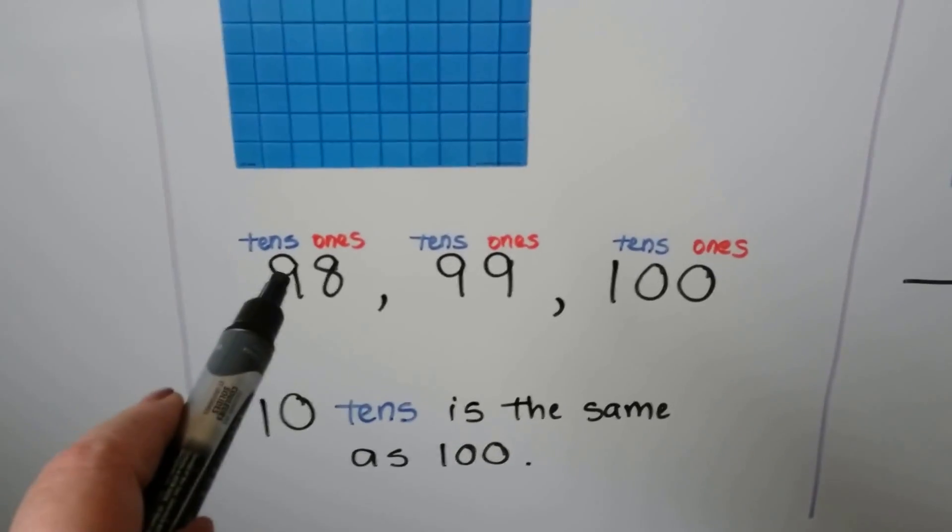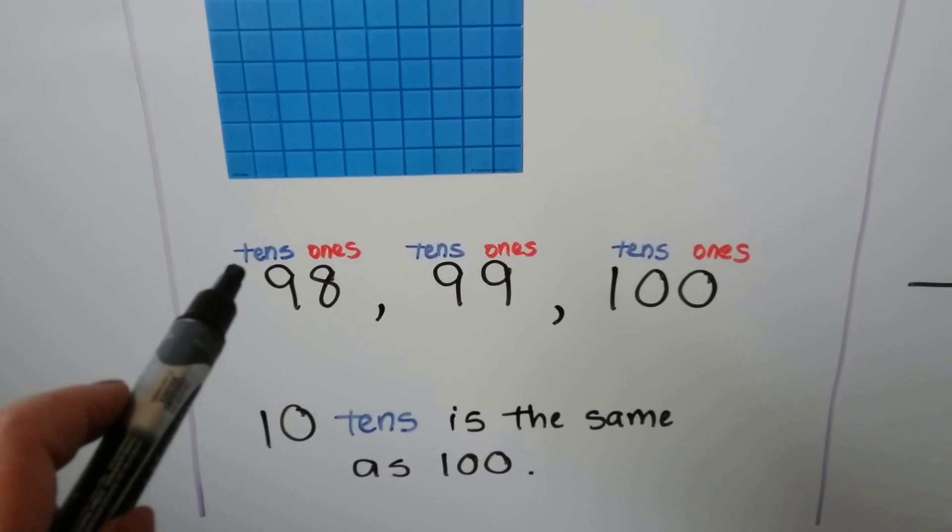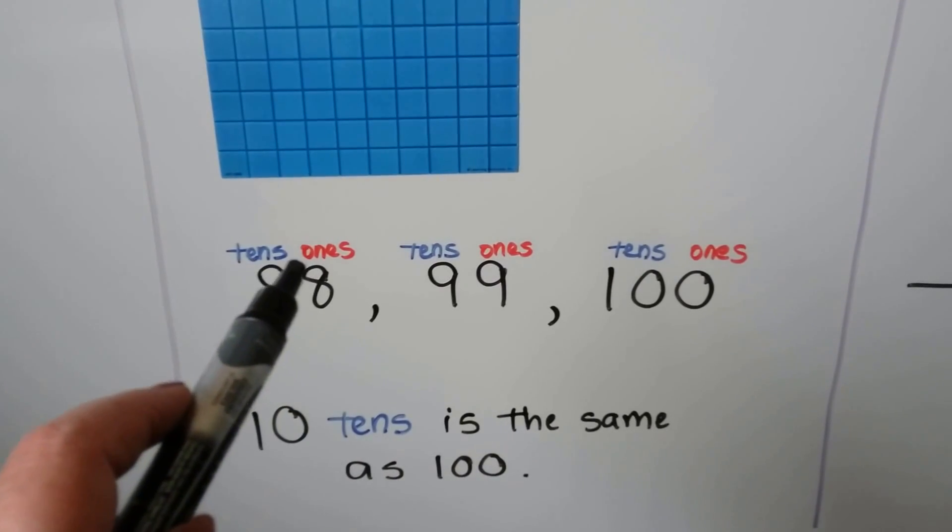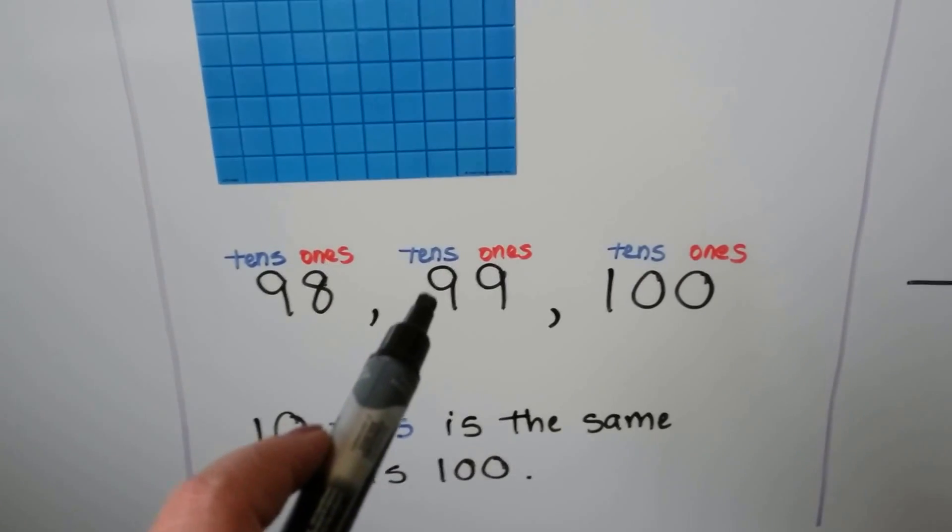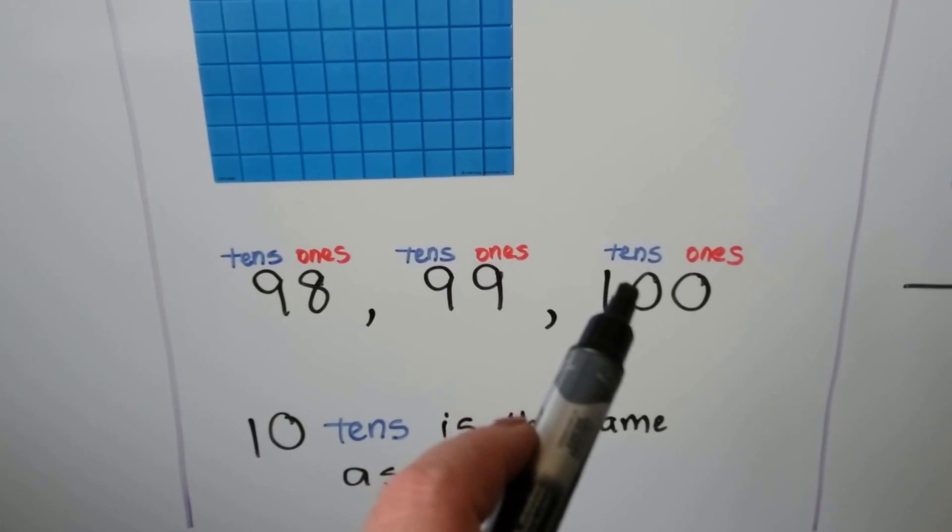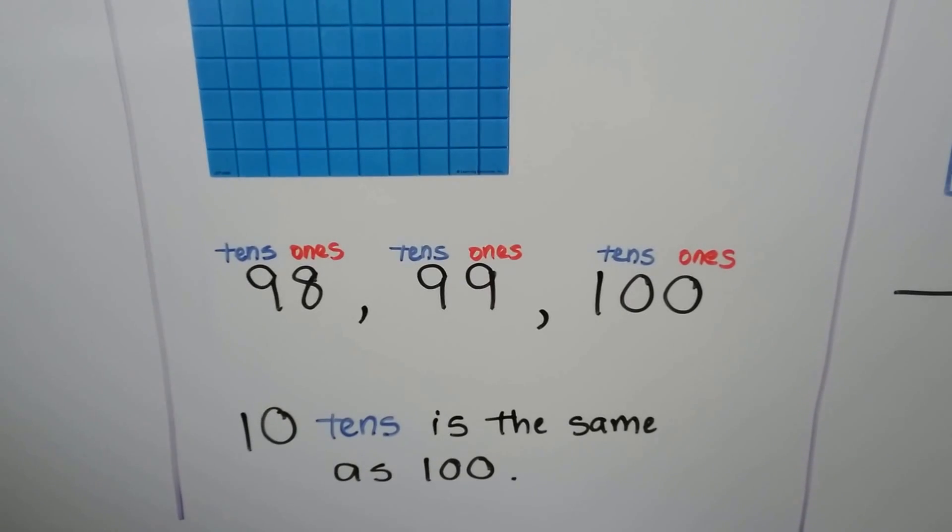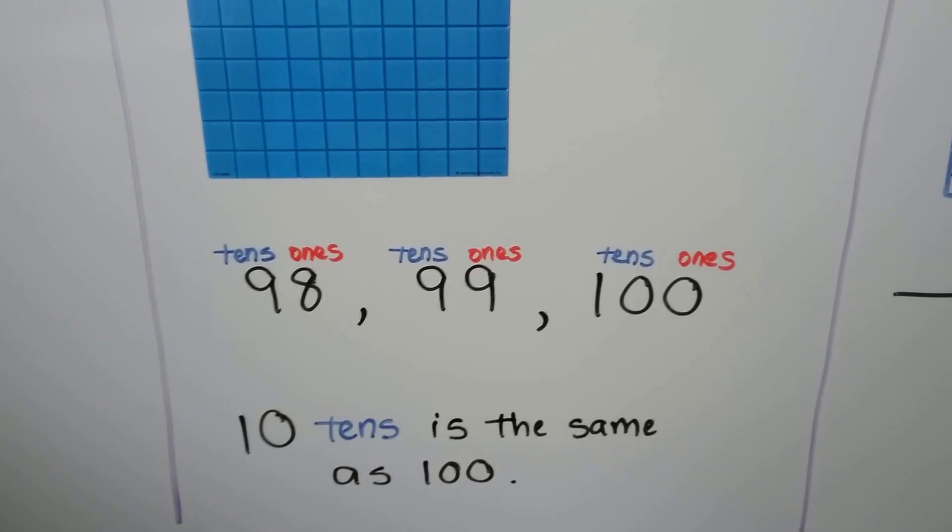When we count 98, 99, 100. Ninety-eight has 9 tens and 8 ones. Ninety-nine has 9 tens and 9 ones. The very next number would be 10 tens and no ones, zero ones. Ten tens is the same as 100.